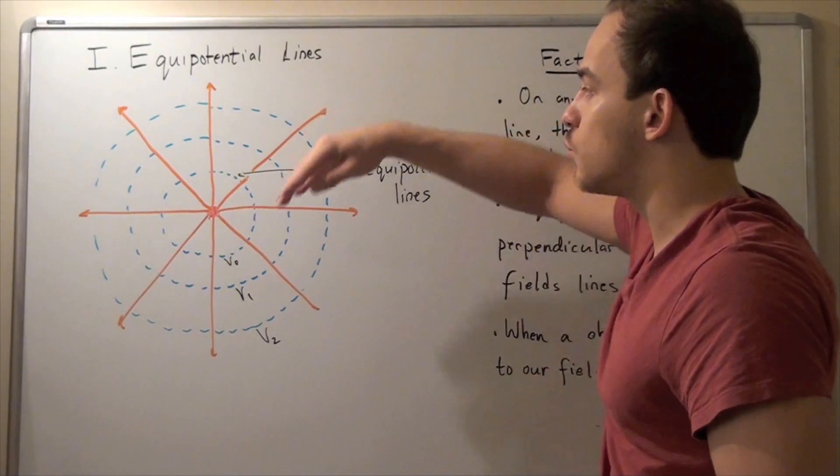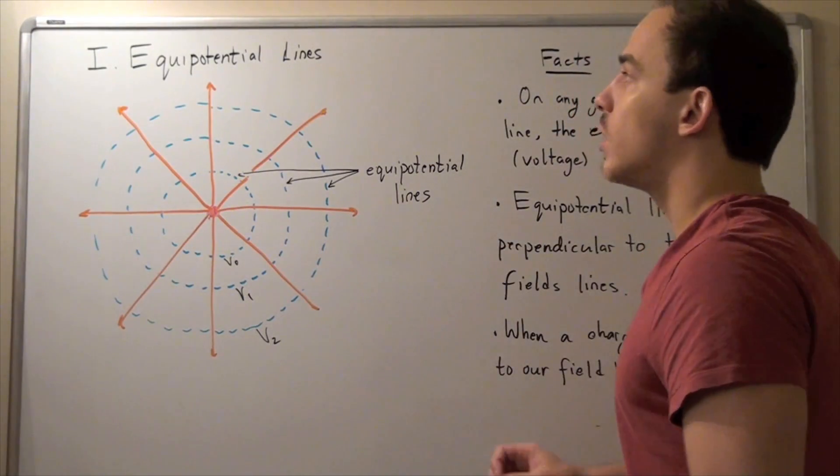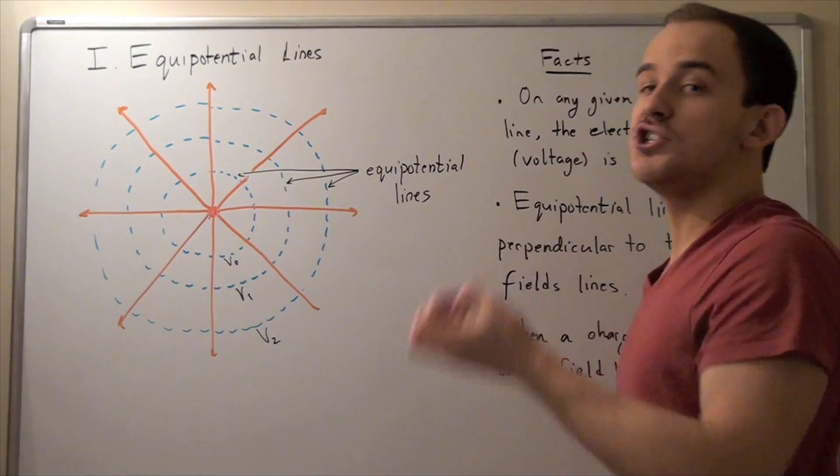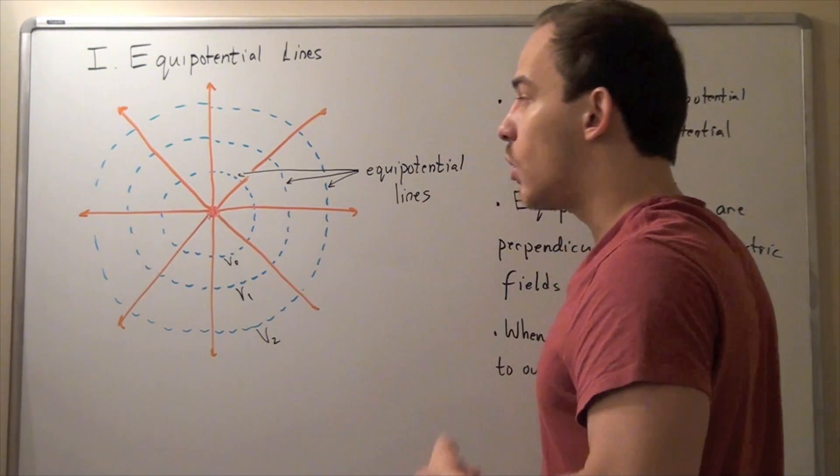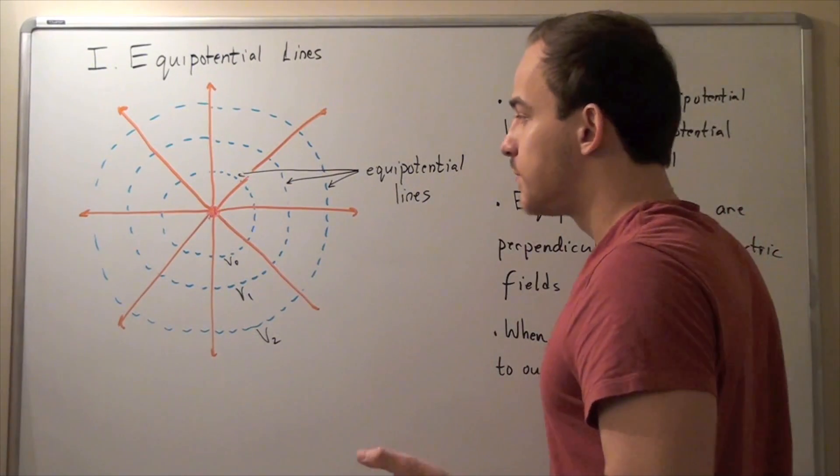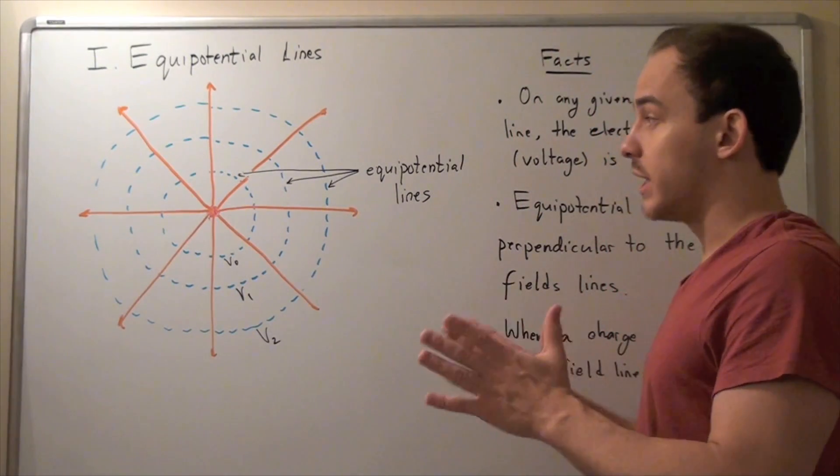And that's because if I place another charge close by, these lines of force will be curved. And so, therefore, my equal potential lines are not always circles. They could have, really, any shape. They could be ovals. They could also be straight lines. And we'll see that when we talk about plates or electric plates.